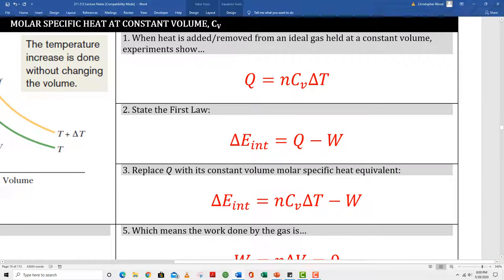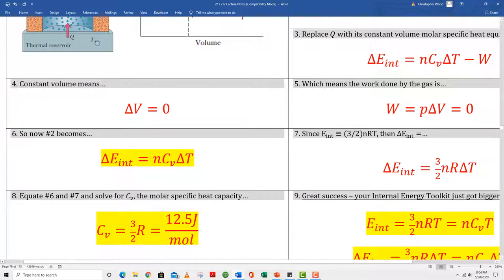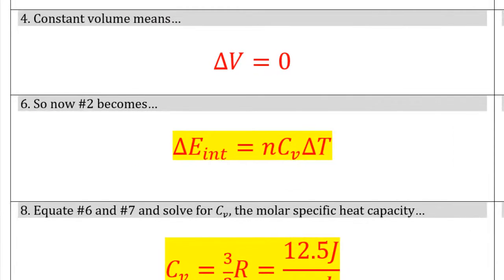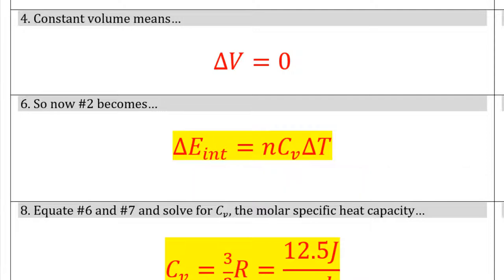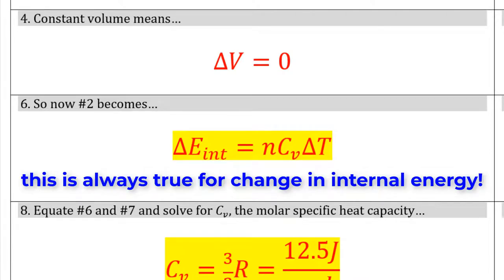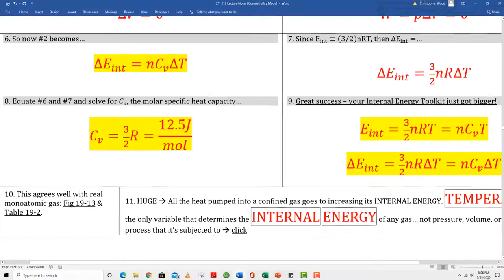Box 1: experiments show Q equals NCV delta T. CV is referred to as the molar specific heat capacity of a gas at constant volume. Box 2 restates the first law of thermodynamics. Box 3 updates the first law by combining boxes 1 and 2. Box 4: because the piston is prevented from moving, there is no change in volume. Box 5: if nothing moves, even though there are underlying forces, no work is done. Box 6 shows the updated first law of thermodynamics. Because internal energy depends only on temperature, box 6 is true for an isochoric process, an isobaric process, an isothermal process — any kind of process. Give this an extra special highlight color.